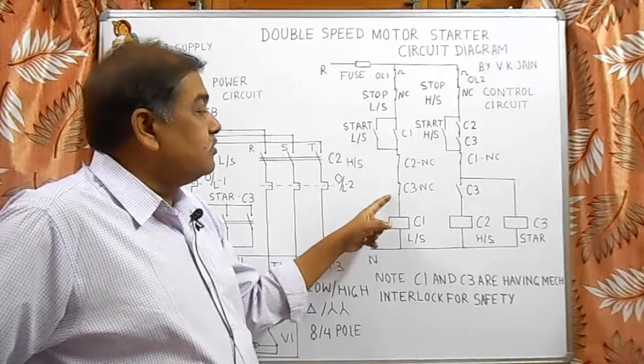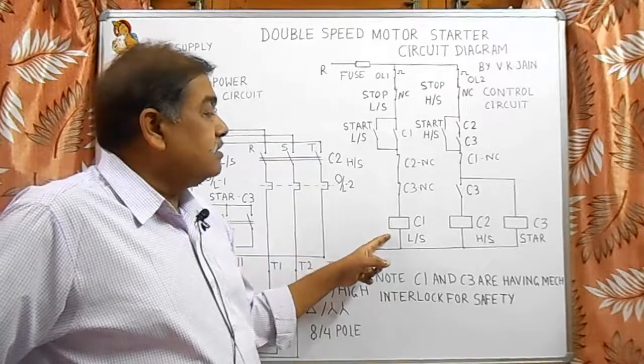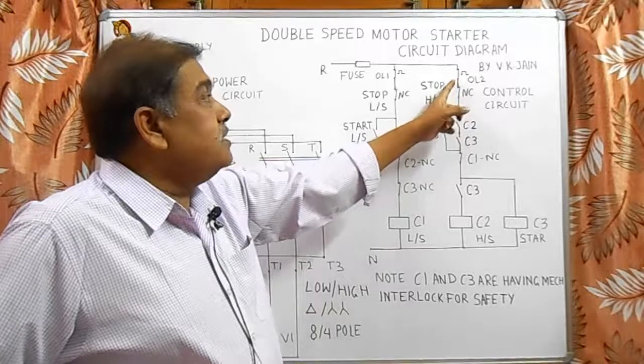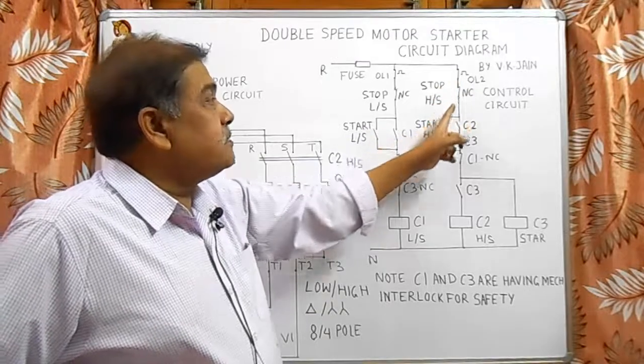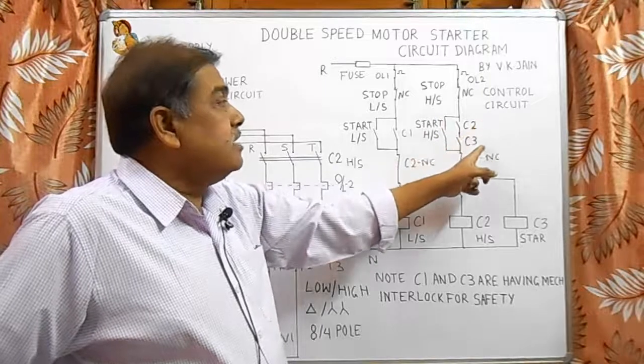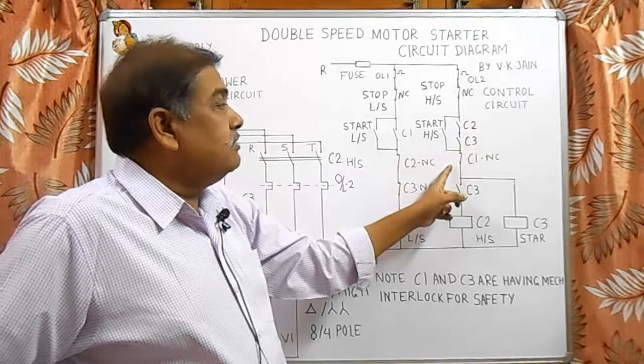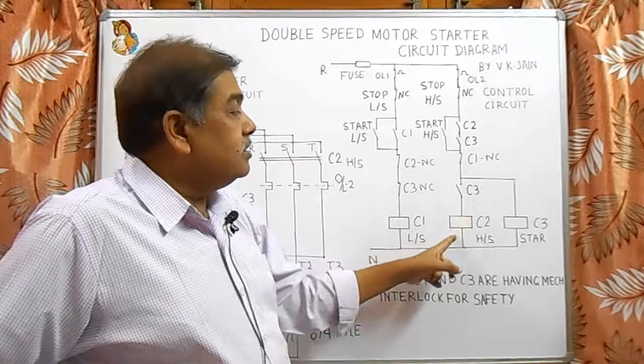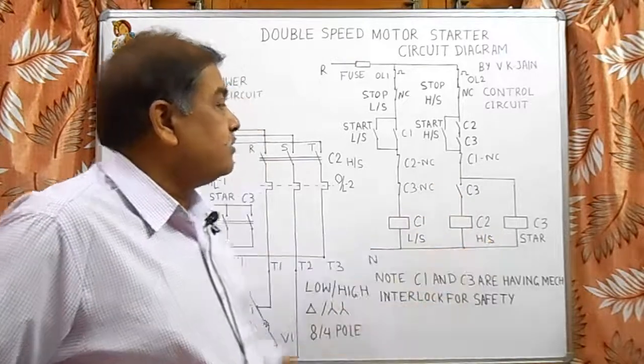Here overload relay for high speed, stop button for high speed, start button for high speed and C2 and C3 are holding contact and C1 is NC contact for interlocking. Here C2 contactor and C3 contactor for high speed.